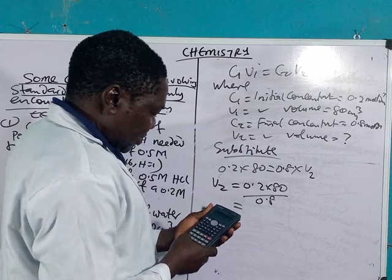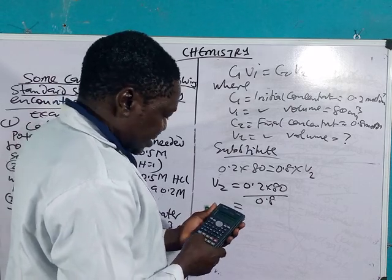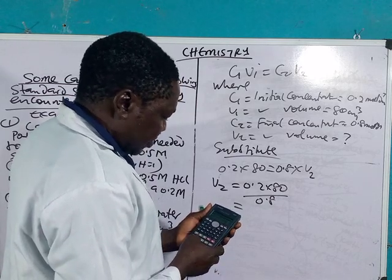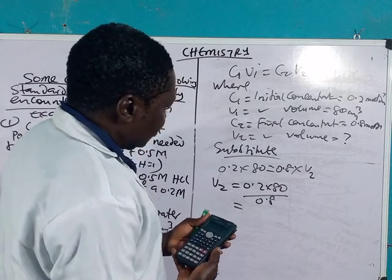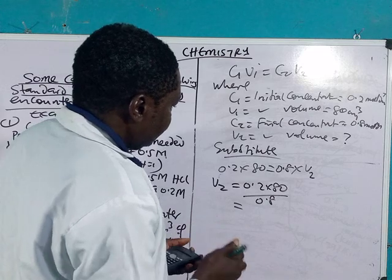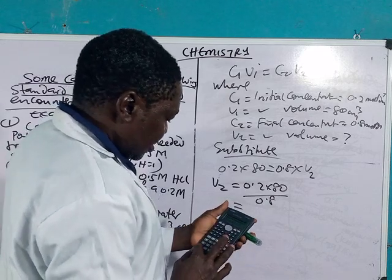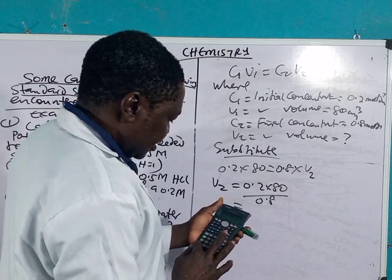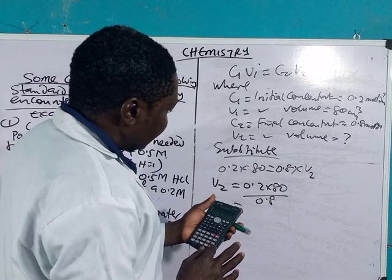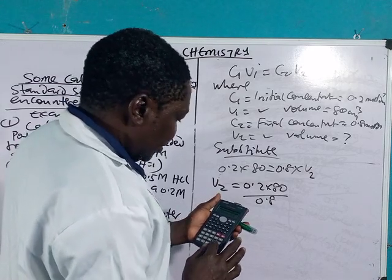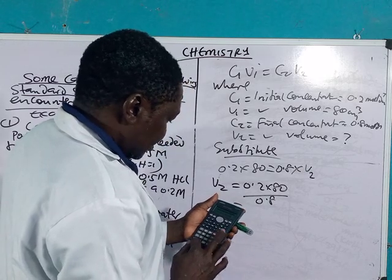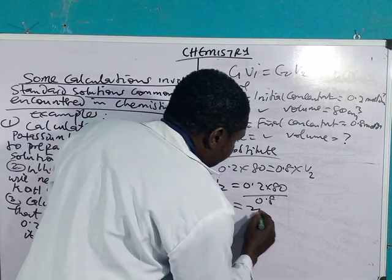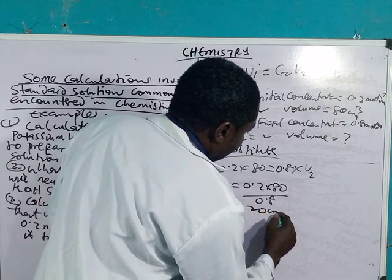You have 0.2 times 80 gives you 16, divided by 0.8. This will give you 20. Let's do it again.